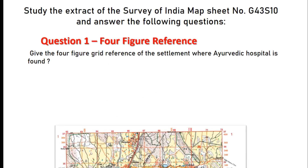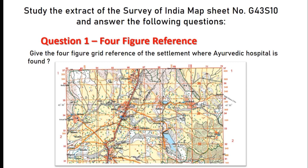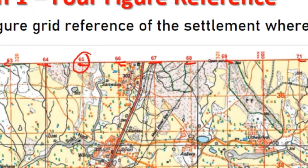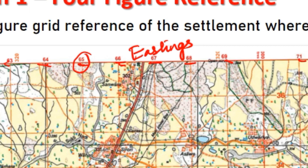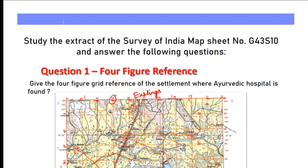In the Toposheet, we have certain numbers written in red colour at the bottom, at the left and right, and at the upper portion also. The numbers at the bottom and the upper portion are similar and they increase towards your right side — they are known as the values of Eastings. The values on the left and right of the extract are also the same in number and they increase towards the north side — they are known as the values of Northings.